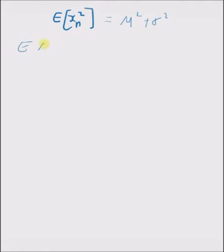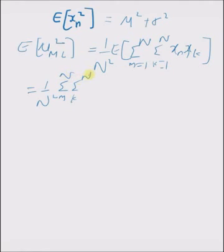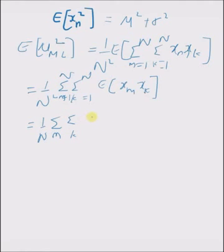The second term is the expectation of μ_ml squared, which equals the expectation of 1/n² times the double summation over m and k from 1 to N of x_m · x_k. Since expectation is a linear operator, the expectation can be taken inside, giving the expectation of x_m times x_k. From the previous video, we established that E[x_m · x_k] = μ² + δ_mk · σ², where δ_mk is the Kronecker delta. So we have the double summation over m and k of (μ² + δ_mk · σ²).